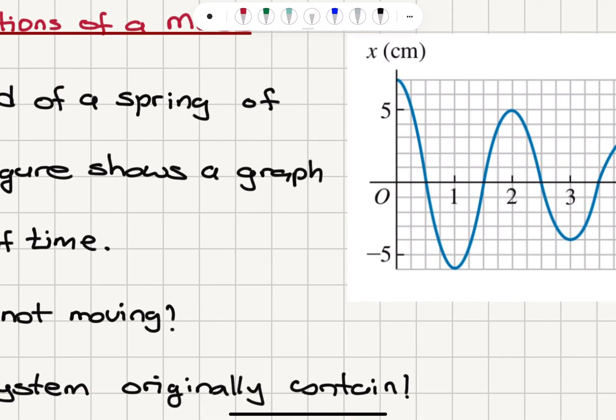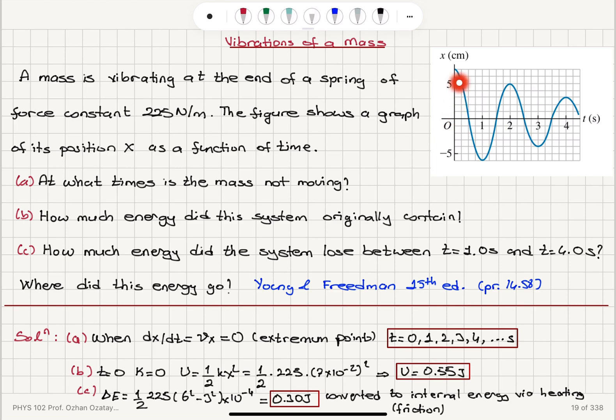At t equals zero, where we have zero kinetic energy, we only have potential energy. x equals seven centimeters here, one half kx squared. This is basically the maximum stretch in the spring, one half times 225 times seven times 10 to minus two meters squared, that's 0.55 joules.